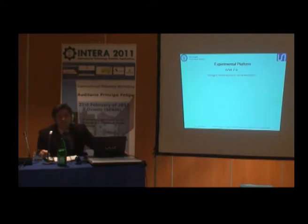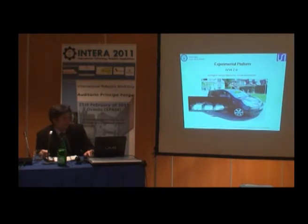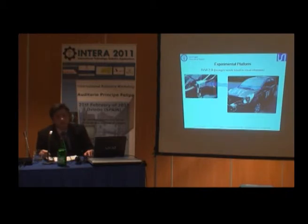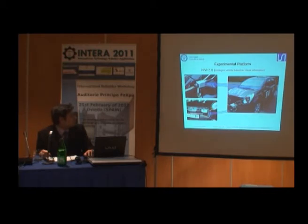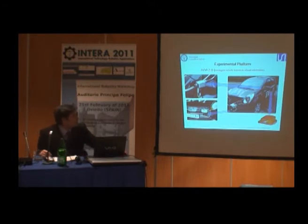Our experimental platform is the vehicle EV — Intelligent Vehicle based on visual information. This is a commercial vehicle where we have added a stereo system and a computer system inside the boot. Besides the stereo system, the EV has got other sensor systems such as an infrared camera for pedestrian detection at night and a laser lidar for obstacle detection and classification. The vehicle EV also has a GPS device in order to know its location and speed at all times.